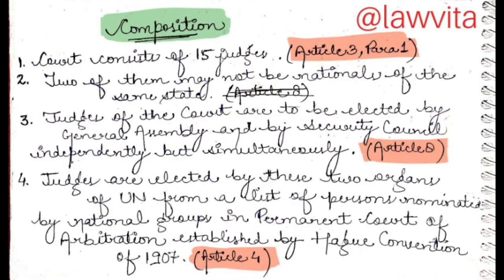Point 3: judges of the court are elected by the General Assembly and by the Security Council independently but simultaneously — the two organs elect judges on different levels but with the same ballot. This is in Article 8. Point 4: judges are elected by these two organs of the UN from a list of persons nominated by national groups.